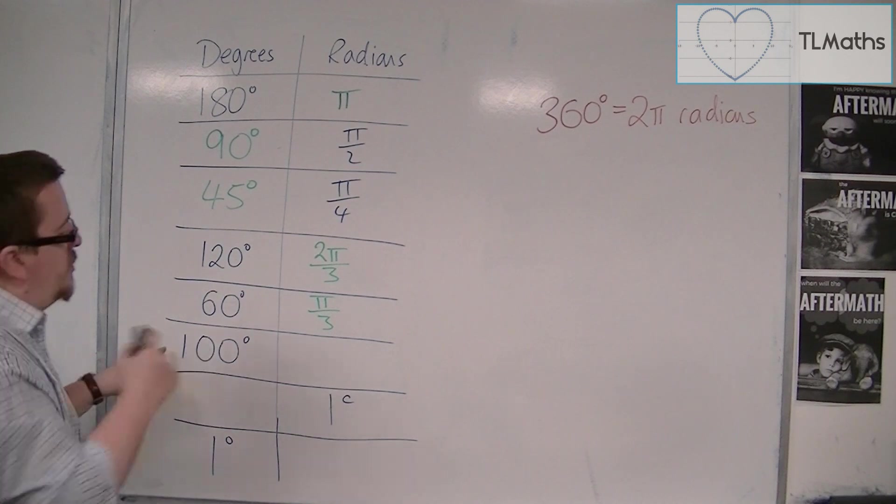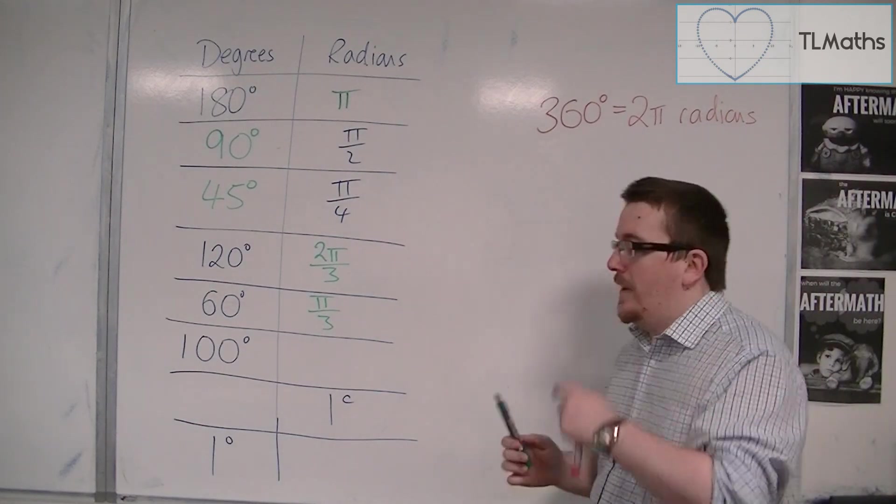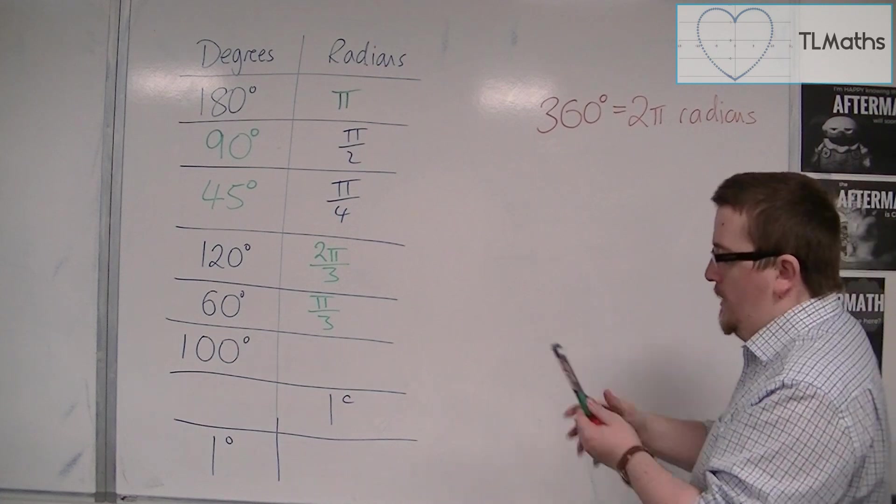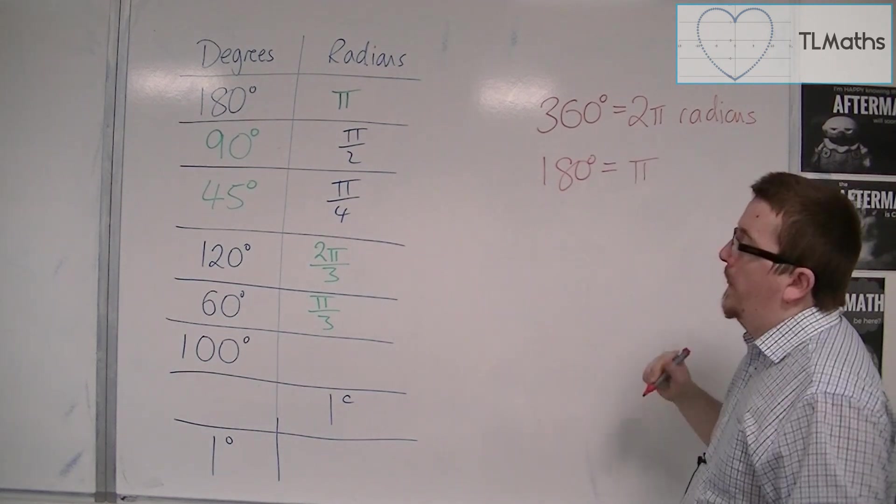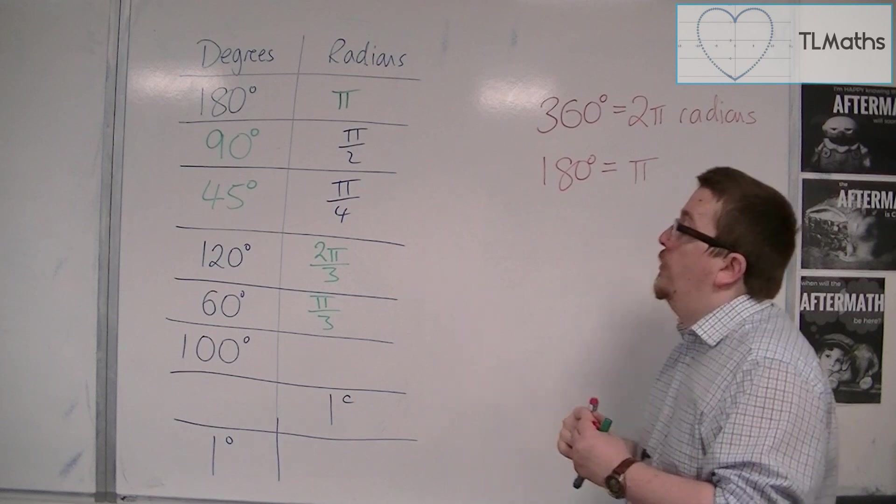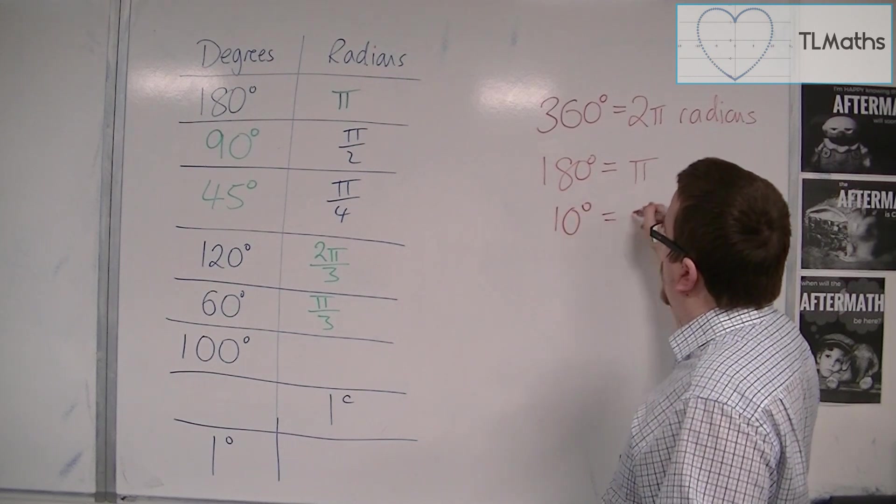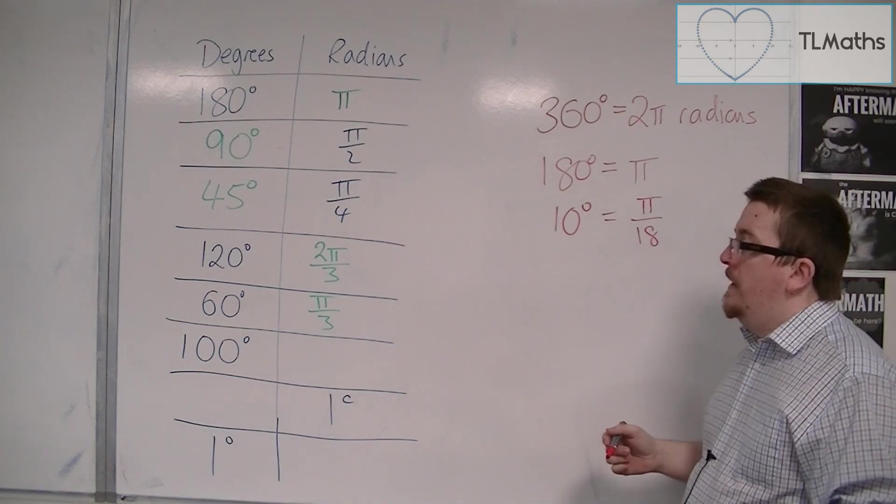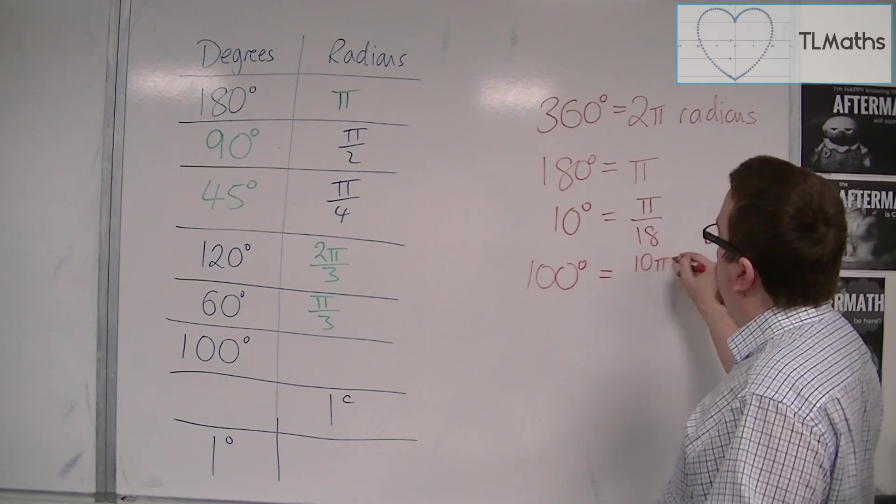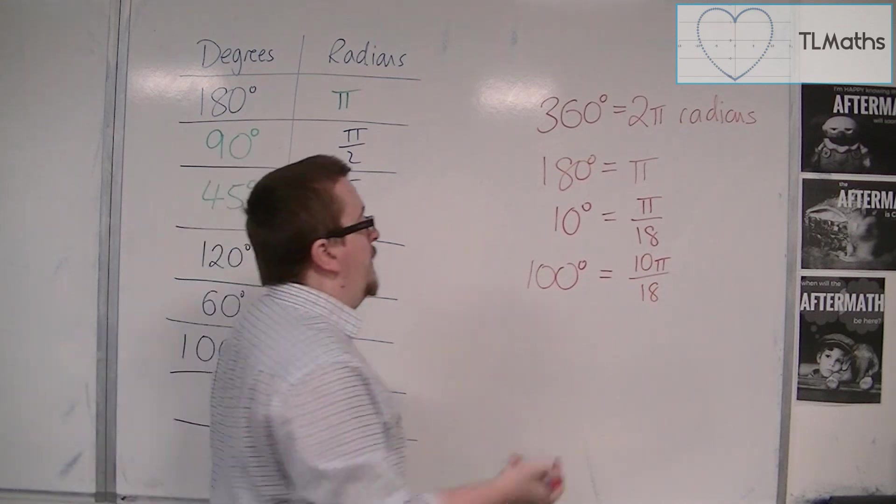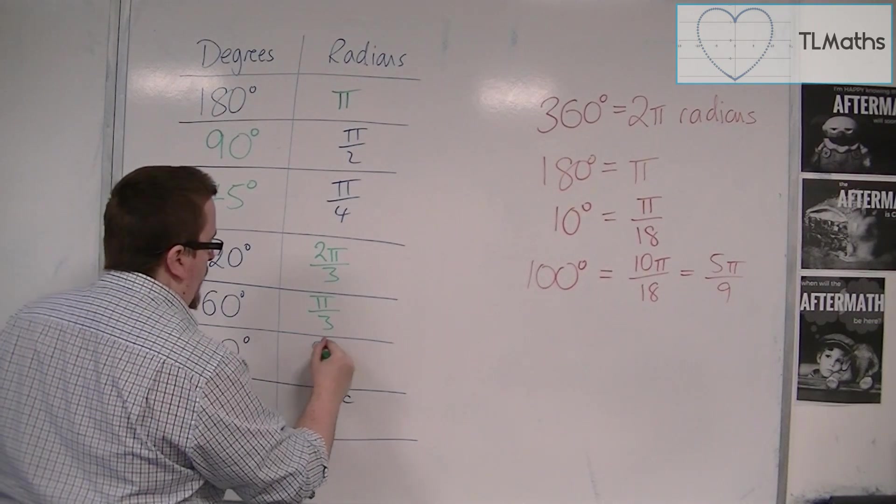Now, 100 degrees is not a direct factor of 360. So, what we're going to do is if we look at this 180 is pi, so 180 degrees equals pi radians, then what I could do is I could divide both sides by 18, that would get me 10 degrees is equal to pi over 18. And now I need 100 degrees, so I can multiply that by 10. So, I get 10 pi over 18, and 10 pi over 18 is 5 pi over 9, so this would be 5 pi over 9.